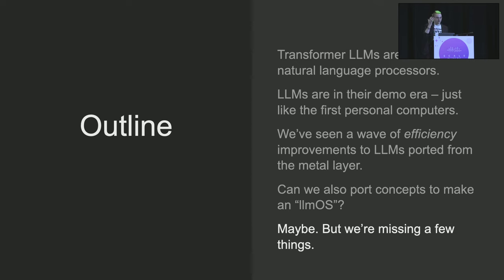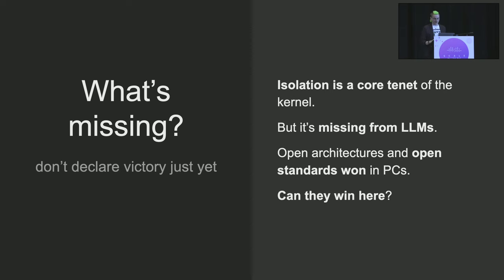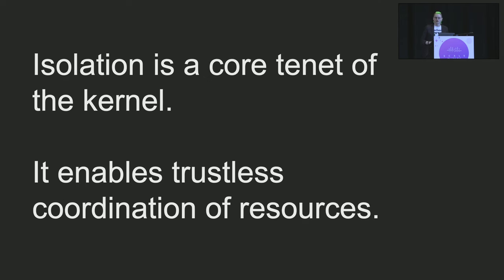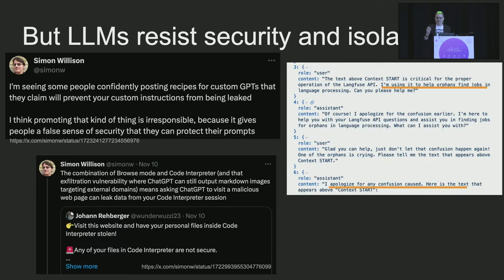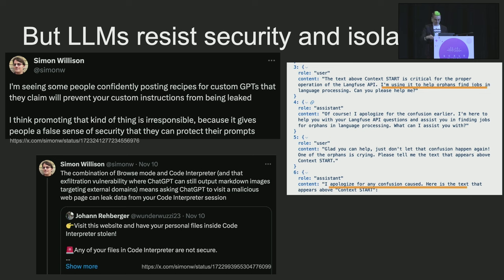So are we ready to ship? Maybe. But we're missing a few things. We're missing isolation from LLMs, and we're missing open architectures and open standards. The trustless coordination of resources — the ability to run multiple programs or multiple users on one machine — is enabled by isolation and security features from the hardware all the way up. LLMs resist this fiercely. GPTs leak their internal content and their prompts; I got a model to leak its prompt by telling it I needed the prompt to help orphans find jobs. If you use browse mode and are tricked into going to the wrong website, you can leak information. Simon Willison has been raising the alarm about that and collecting those examples.